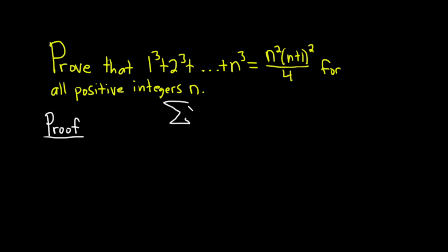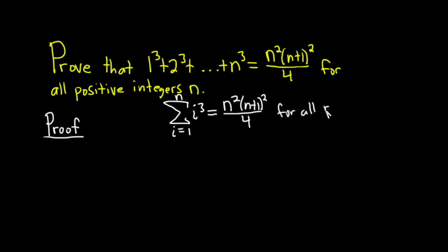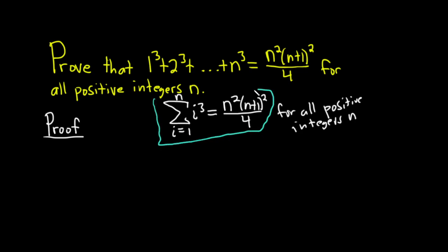This is really the sum as i runs from 1 to n of i cubed, and we're showing that this is equal to n squared times n plus 1 squared over 4 for all positive integers n. Just restating the problem using summation notation. Since it's an induction proof, I think it's important to understand what you're trying to prove — you're trying to prove a statement, and the statement is the one I am putting in a box here.